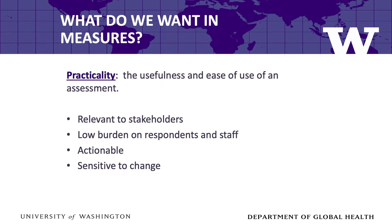We want measures to be reliable and valid, but we also want them to be practical or pragmatic—useful and easy to use. A practical measure is one that measures something important to stakeholders, imposes low burden on respondents or staff, can be acted upon, and can tell us when something has changed. An aspiration for implementation science is that practitioners will use measures to assess their local implementation contexts, monitor their implementation efforts, and evaluate their implementation outcomes. However, practitioners will not use measures if they are not practical, no matter how reliable or valid they might be.